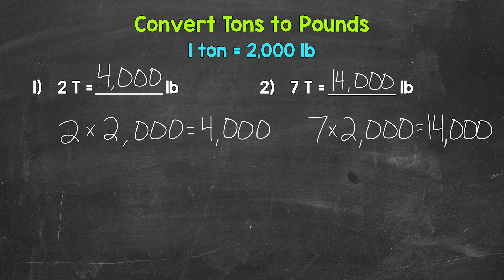So there you have it. There's how to convert tons to pounds. Just remember, one ton equals 2,000 pounds. So we multiply by 2,000 when converting tons to pounds. And whenever we convert from a larger unit to a smaller unit, we multiply.